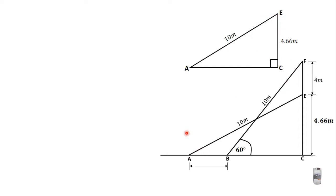If we draw this right angle triangle AEC, we can see that AB is in triangle AEC. Before we can find AB, if we are able to find AC and then find BC, we can subtract BC from AC to get AB.